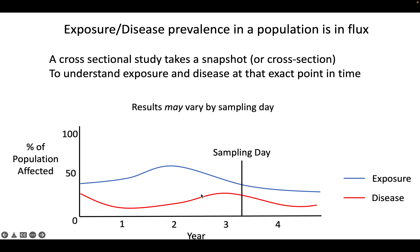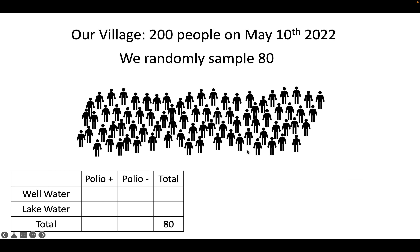So, my example: we have a village of 200 people on May 10, 2022, and we randomly sample 80 people. There's a polio outbreak in this village — polio is a waterborne disease in some developing countries — and we're trying to figure out whether the outbreak is due to the well water or the lake water. We have the number that drink well water, the number that drink lake water, the number polio positive, and the number polio negative.